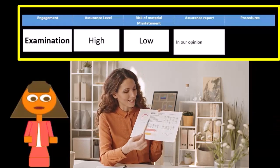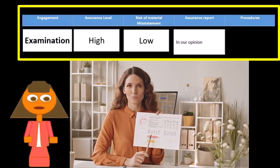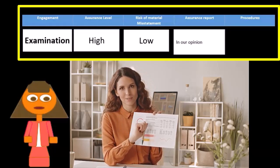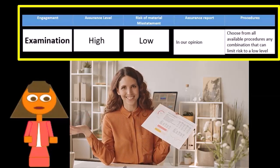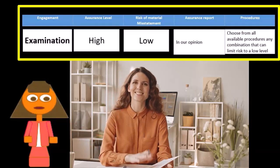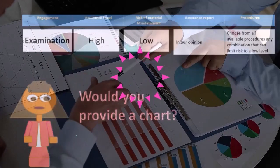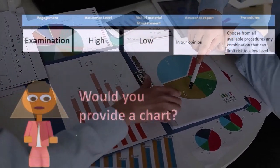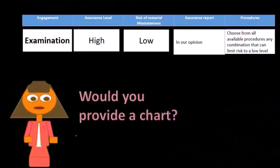We issue a report for these engagements. In a standard audit report, it will say 'in our opinion' — that's part of the standard report language. For procedures, in an audit we choose from all available procedures — any combination that can limit risk to a low level. That could include analytical procedures, going out to the actual site, digging through invoices, and observing operations.